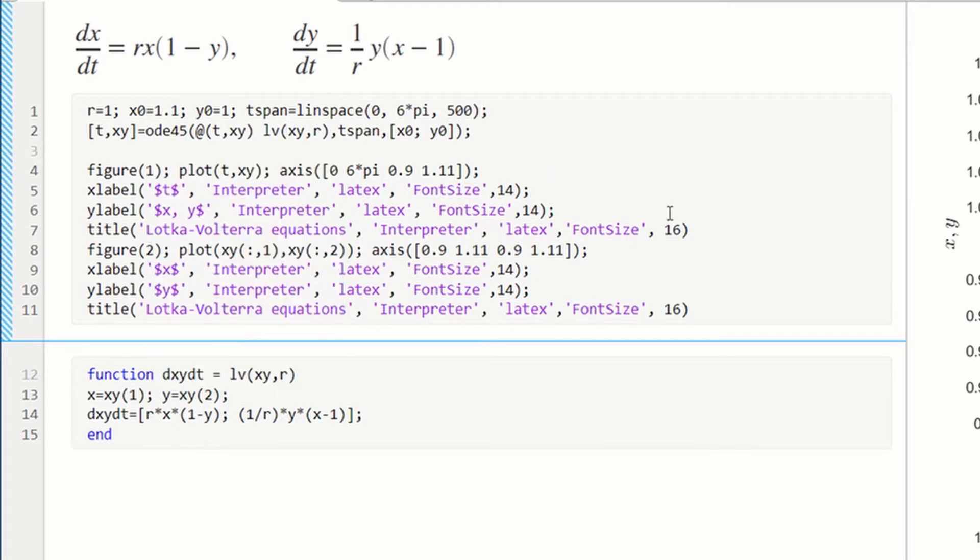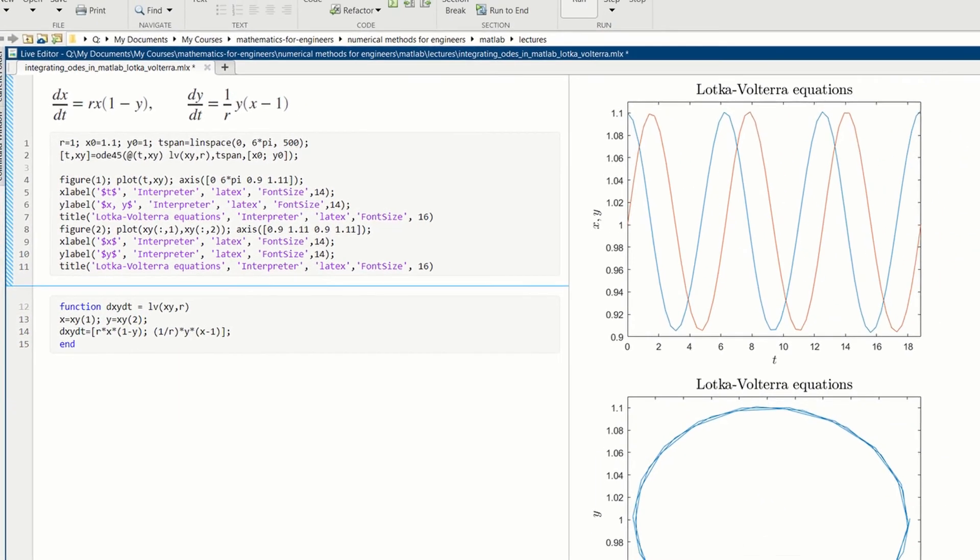The way ODE45 works then is it's still going to solve the differential equation at the same 57 points, but it will do its own interpolation and give you an output at 500 points instead of 57 points. It will give you an output at all the specified values of t-span. So we could do the interpolation ourselves using cubic spline, but we can let ODE45 do the interpolation for us. So let's run again.